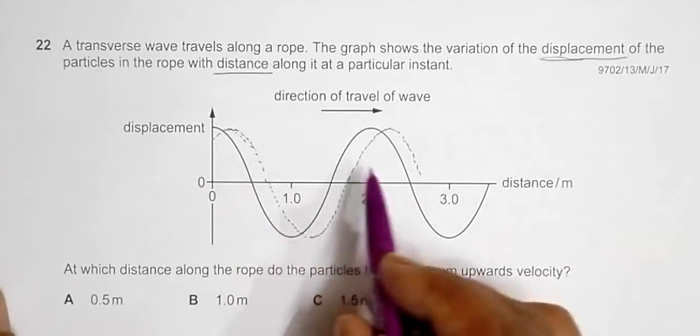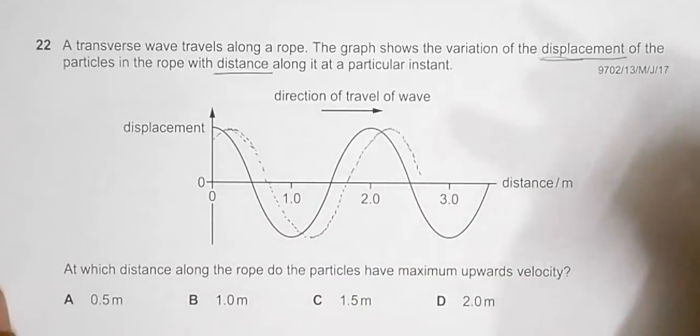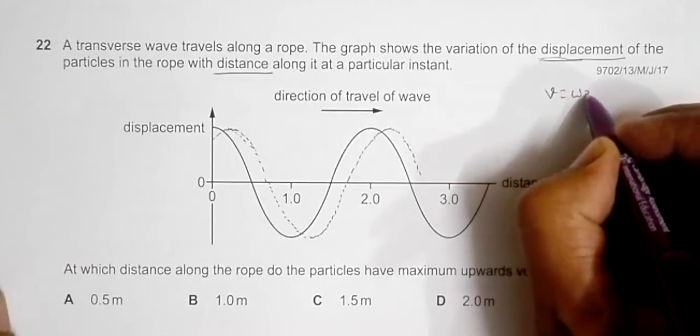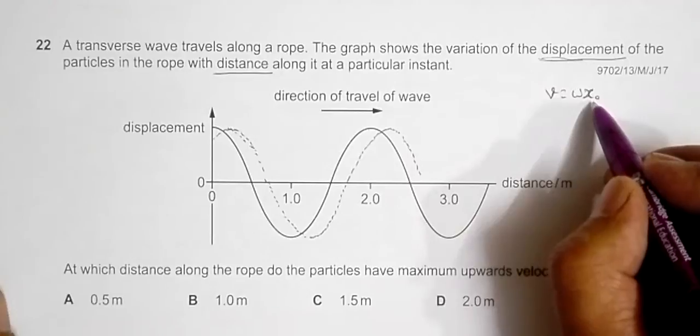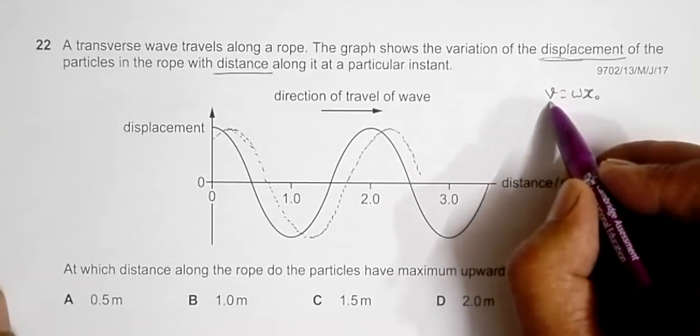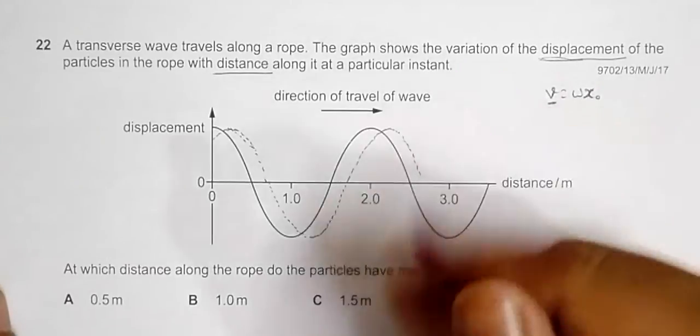The maximum velocity in any wave will always be at the middle according to the principles of simple harmonic motion. So we often have a formula as V equals omega times X naught. X naught is the amplitude, and this is the value of the velocity, and it occurs at the mean position or the middle position.